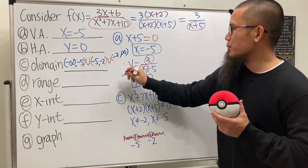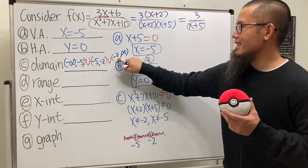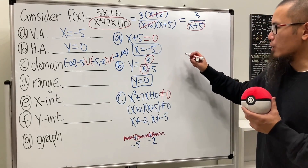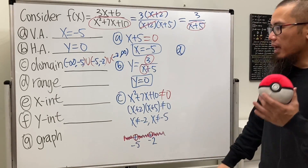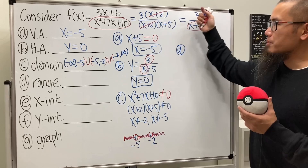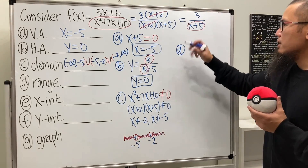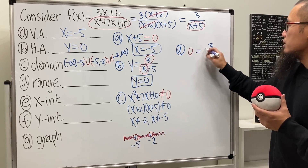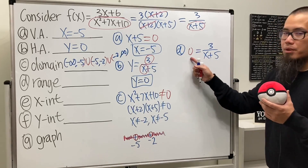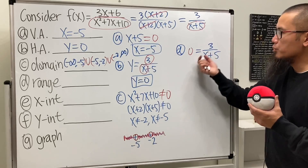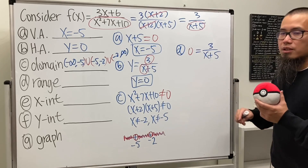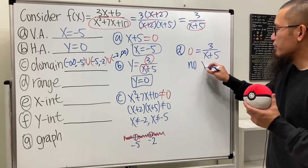For the x-intercept, use the reduced version: 3 over (x + 5) equals zero. This is not possible because a fraction can only equal zero when the numerator is zero, but 3 is not equal to zero. So there is no x-intercept — none.